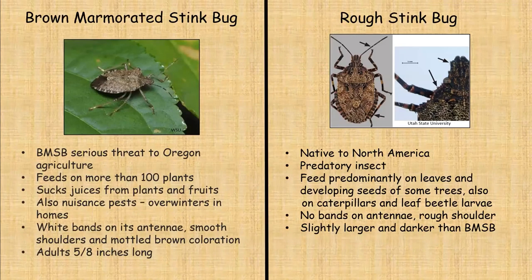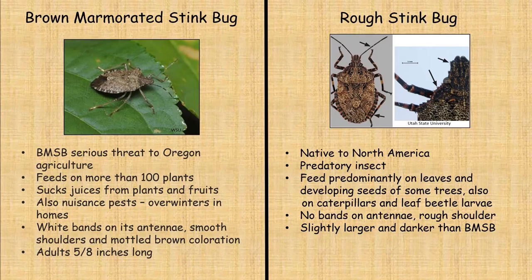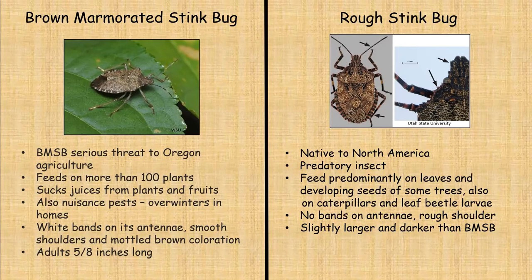The brown marmorated stink bug is a pest many of us have been dealing with for several years and is a very serious threat to Oregon agriculture. It feeds on more than 100 plants, sucking the juices from plants and fruits. Some of you may have found this pest inside your home, garage, or shed, as they overwinter in warm places. The brown marmorated stink bug has white bands on its antennae, very smooth shoulders, and a mottled brown coloration. The adults are about five-eighths of an inch long.